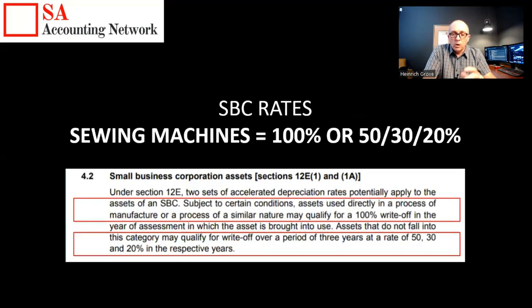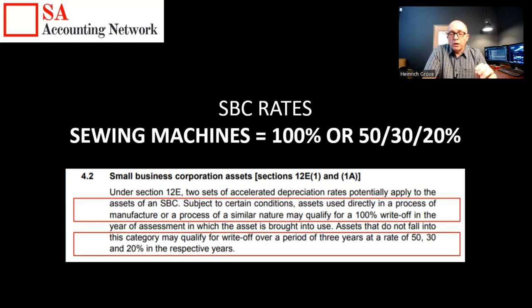Under Section 12E of the Income Tax Act, clause 12E(1) and (1A), two sets of accelerated depreciation rates potentially apply to the assets of a Small Business Corporation. Subject to certain conditions, assets used directly in the process of manufacturing or a similar nature may qualify for 100% write-off in the year of assessment in which the asset is first brought into use. Assets that do not fall into this category may qualify for a write-off over three years at rates of 50%, then 30%, then 20% in the respective years.